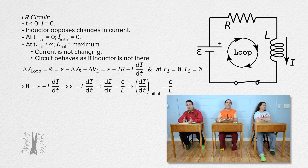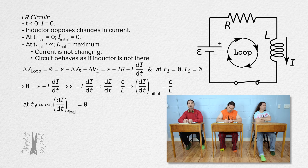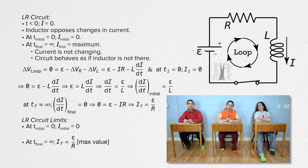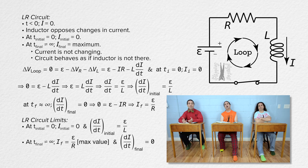We also know that after a long time, the final time rate of change of current equals zero. Substituting that into the Kirchhoff's loop rule equation gives zero equals EMF minus current times resistance, so current final equals EMF divided by resistance. Our limits for current are that it starts at zero and increases to EMF divided by resistance, which is the maximum value. The derivative of current starts at EMF divided by inductance and decreases to zero, which is the maximum time rate of change of current in this circuit.